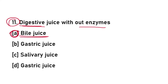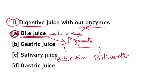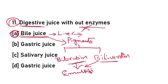Eleventh question: the digestive juice without enzymes is bile juice. Bile juice is produced by the liver. Bile juice does not contain any enzymes. Moreover, bile juice contains pigments — bilirubin and biliverdin. Bile juice also helps in the emulsification of fats.